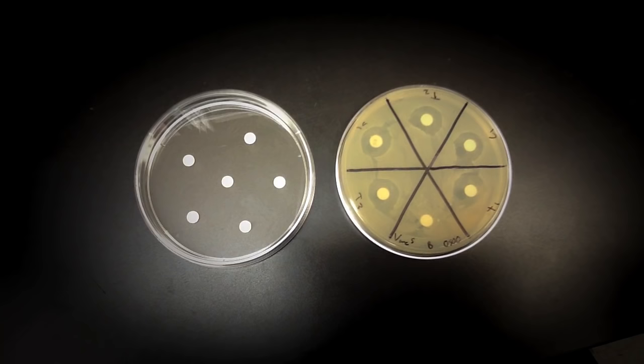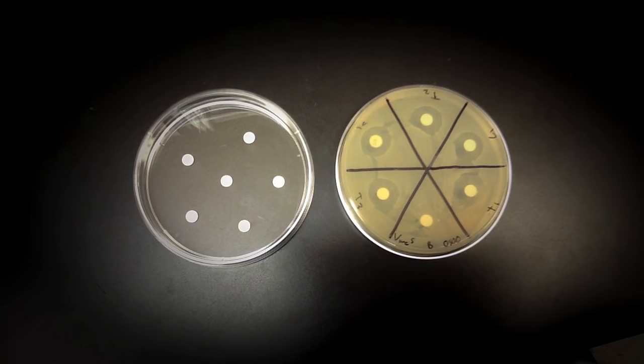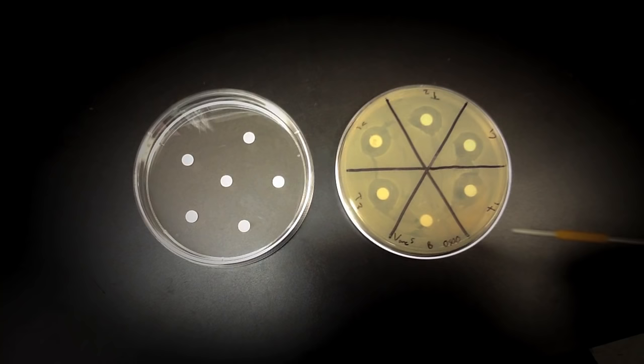In this assay, a filtered paper disc is loaded with a specific amount of antibiotic and placed on a lawn of bacteria. The antibiotic will diffuse out of the disc and into the media where it's taken up by the growing cells. If the bacteria are susceptible to the antibiotic, they will die off.